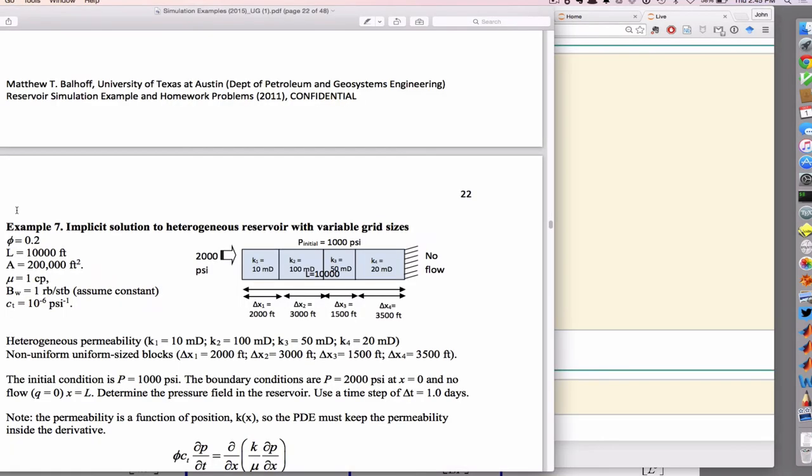Okay, so the inputs to the problem: the porosity is 0.2, the entire length of the reservoir is 10,000 feet, the area of the reservoir is constant at 200,000 cubic feet. Viscosity one centerpoise. The fluid is water so the formation volume factor is 1. The compressibility is 1 times 10 to the minus 6th. On the left-hand boundary we have a constant pressure of 2,000 PSI. There's an initial pressure in the reservoir everywhere of 1,000 PSI. And then each grid block has its own permeability: 10 millidarcy, then 100 millidarcy, then 50 millidarcy, then 20 millidarcy. And then on the right side, no flow. And then each grid block also has its own delta X: 2,000 feet, 3,000 feet, 1,500 feet, 3,500 feet.